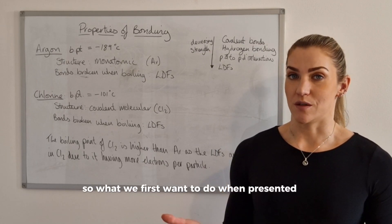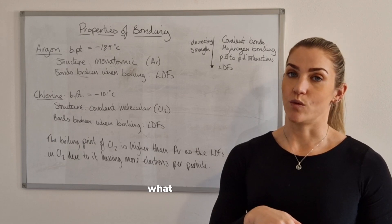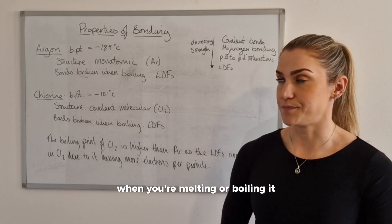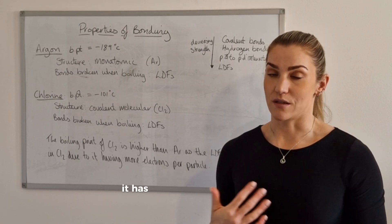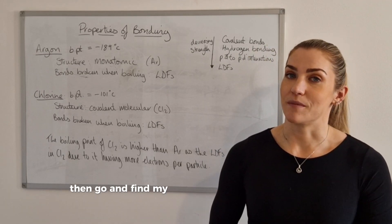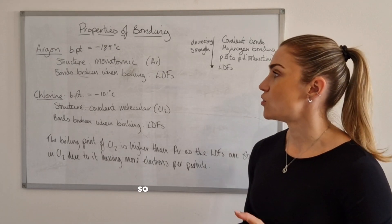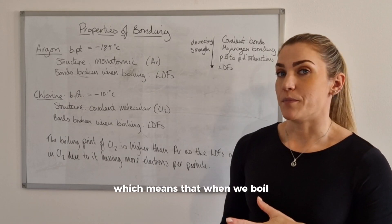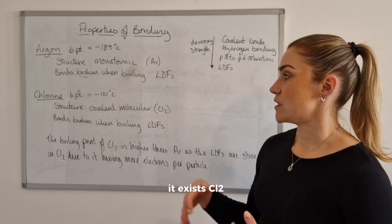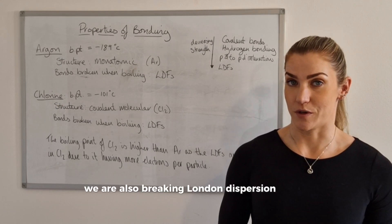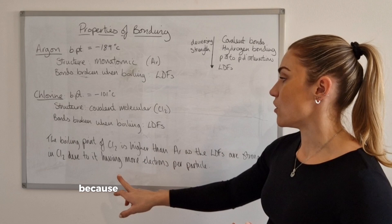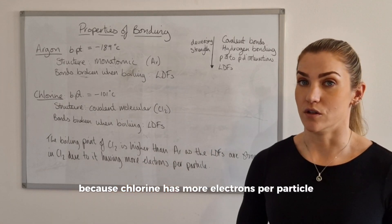When presented with a substance and asked about its melting or boiling point, first identify its structure, then based on that identify what type of attraction is broken when you're melting or boiling it. Argon, being a noble gas, has a monatomic structure — you can use your colour-coded periodic table for this — which means when we boil it we're only breaking London dispersion forces. Chlorine exists as a covalent molecular substance, Cl₂, so when we boil it we are also breaking London dispersion forces. However, the London dispersion forces in chlorine are stronger than in argon because chlorine has more electrons per particle, due to it being diatomic.